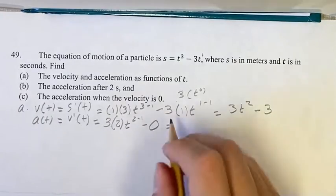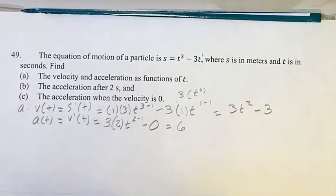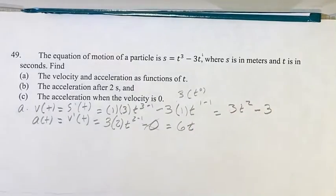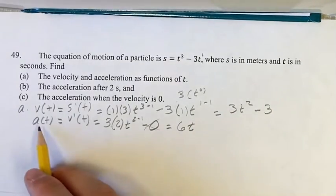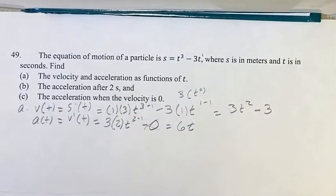And this is going to be equal to 3 times 2, which is 6, t to the 2 minus 1 is t to the 1, which is just t, and we can ignore that minus 0. So your acceleration is 6t and your velocity is 3t squared minus 3.